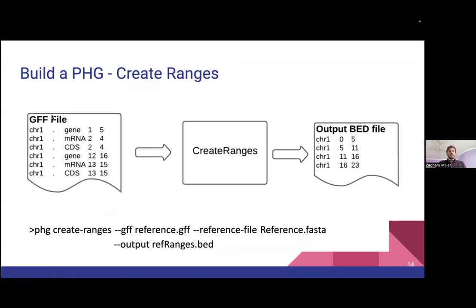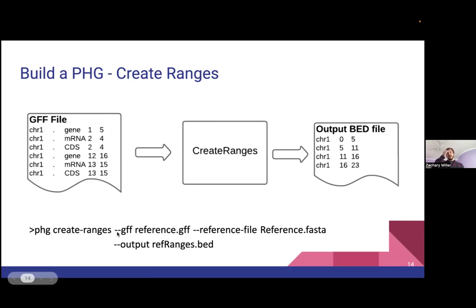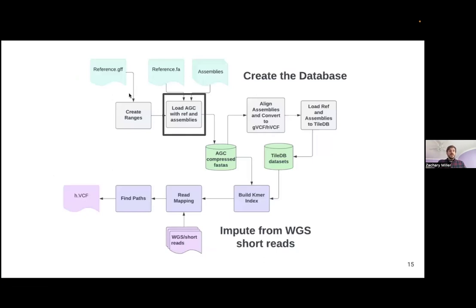We have a little tool called "create ranges" which takes a GFF file and the corresponding reference FASTA, and by default it extracts out the genes and converts them into a BED file, then fills in the gaps between the genes as well. So if there's no gene between positions 5 and 12, we add one between 5 and 11 in BED coordinates. I'm also going to show the actual command you would run to execute this, just to show how easy it is to execute these commands without a ton of parameters. Now we have our BED file.